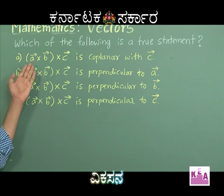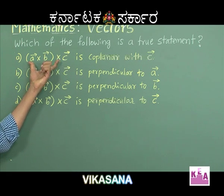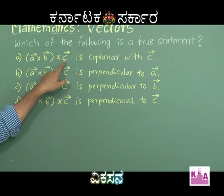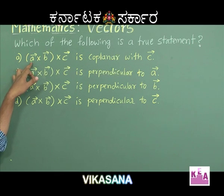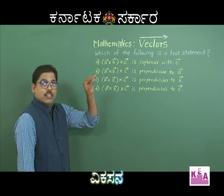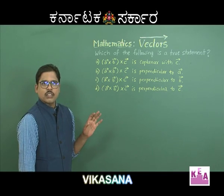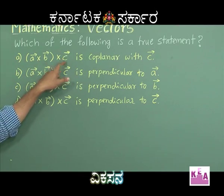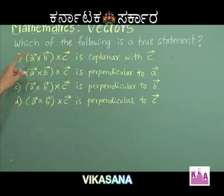The overall result of A cross (B cross C) is perpendicular to vector C and perpendicular to vector A cross B — not to vector A and vector B individually. The result is perpendicular to vector C, so 'coplanar with vector C' is a wrong statement. The overall result is perpendicular to vector C.